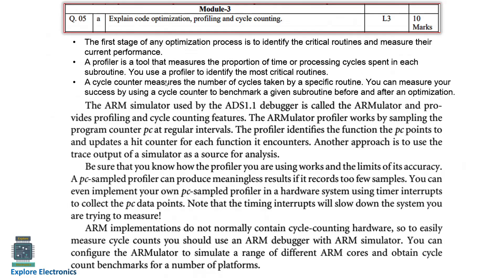The next question is: explain code optimization, profiling, and cycle counting. The first stage of optimization is to identify critical routines and measure their current performance. A profiler is the tool used for this, and a cycle counter measures the number of cycles taken for a specific routine. Explanation related to profiling and cycle counting is provided — since this is for 10 marks, at least one complete page of explanation is required.